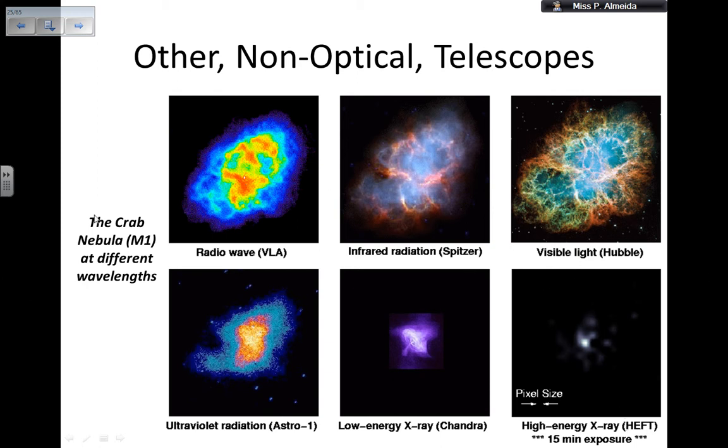So this is the same nebula, the Crab Nebula, and this is at different wavelengths. So you have radio waves, infrared, the visible light, high-energy x-ray, low-energy x-ray, and ultraviolet radiation. And maybe what you can see from this image is that some things that you would not be able to look and to notice from the visible light image are going to show in the other wavelengths.